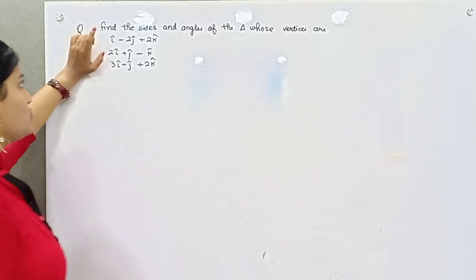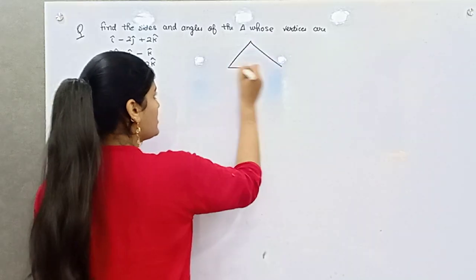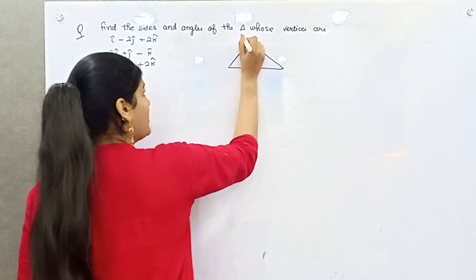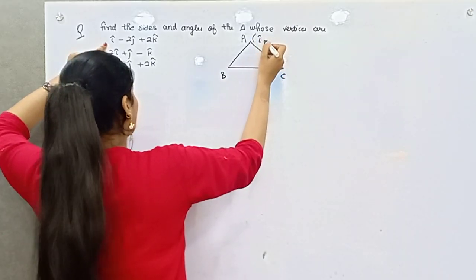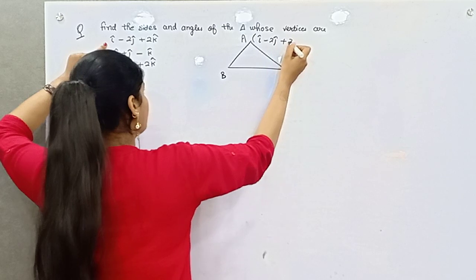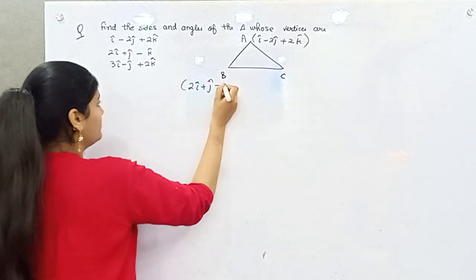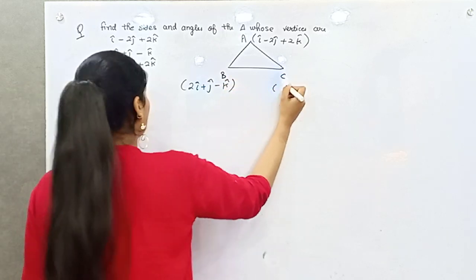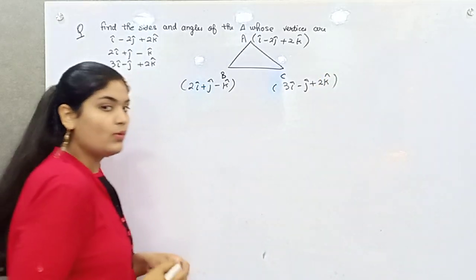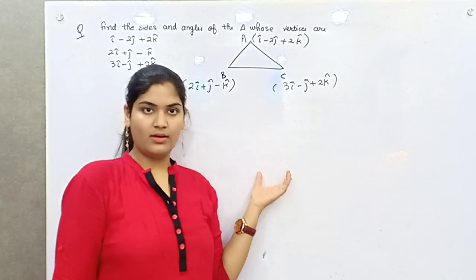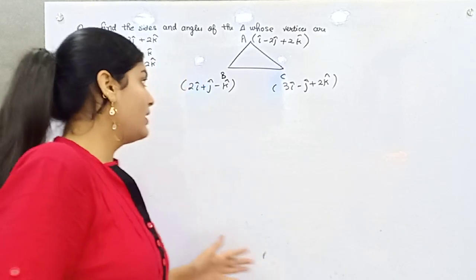Now if you form a triangle — let's say ABC — the vector for A is given, the vector for B is given, and the vector for C is 3i cap, j, 2k cap. You know, i, j, and k are mutually perpendicular unit vectors whose magnitude is 1.